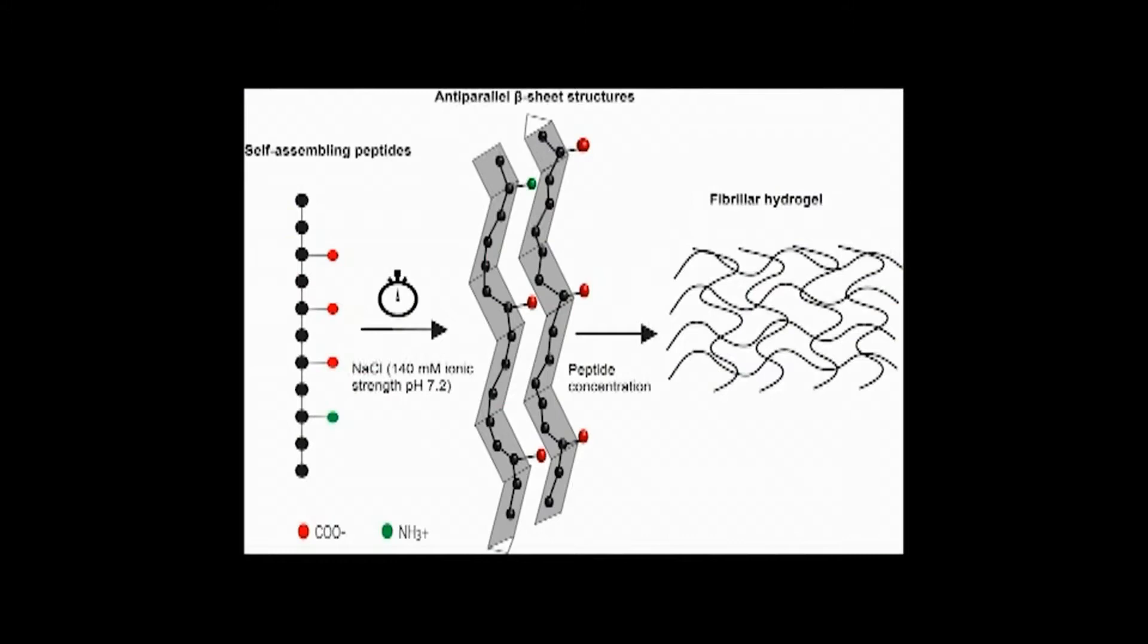So our idea will be to create fibrillar hydrogels that are made up by self-assembling peptides. These self-assembling peptides can form nanosheet structures as well as higher-order structures like fibrils and fibers depending on pH, ionic strength, and peptide concentration.